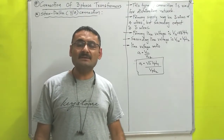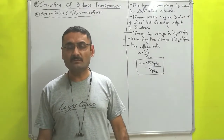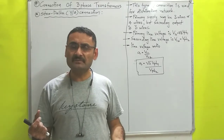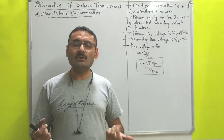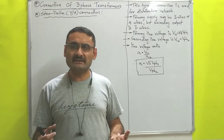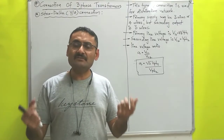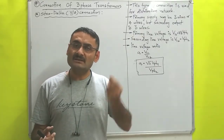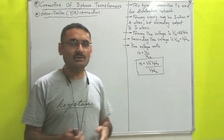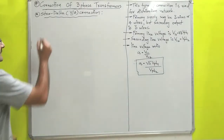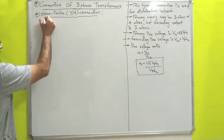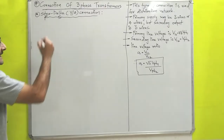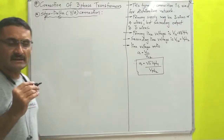We have already discussed the connections of a single-phase transformer, which has one primary winding and one secondary winding. In the case of a three-phase transformer, it also has one primary and one secondary winding. But the windings used in a three-phase transformer are either star connected or delta connected. Here we have star-delta, meaning on the primary side it has a three-phase star connection and on the secondary side it has a three-phase delta connection.